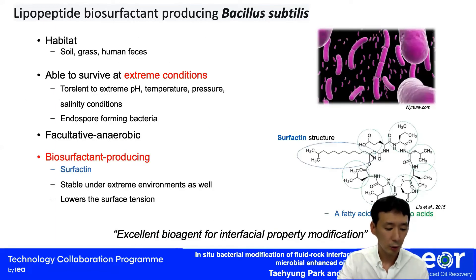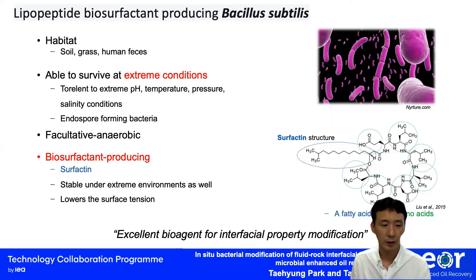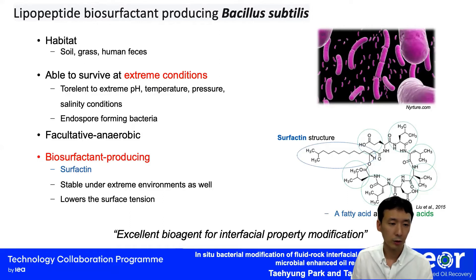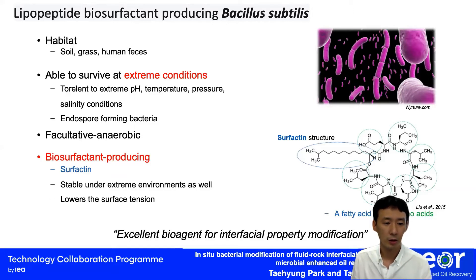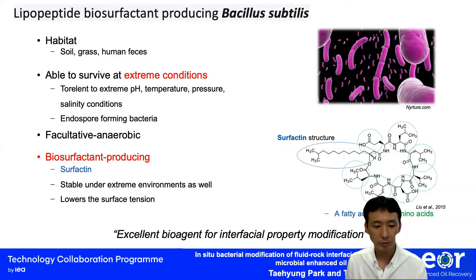For this study, we chose a model bacterium called Bacillus subtilis, which produces a biosurfactant called surfactin. This bacterium is found in many places in nature. It can survive extreme conditions like high pH, low pH, warm temperatures, high pressure, and very saline conditions because of its endospore-forming characteristic. It is facultatively anaerobic, so it does not require oxygen to thrive. When stimulated with proper nutrients, it produces the biosurfactant. So this is an excellent bioagent for interfacial property modification.